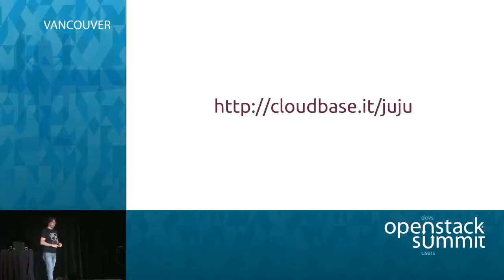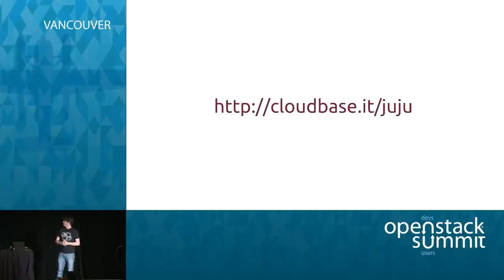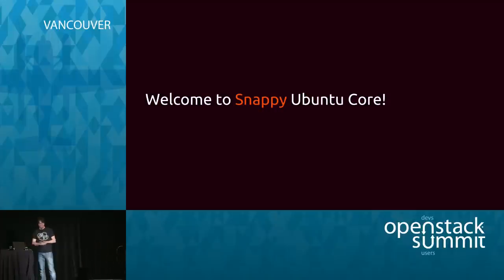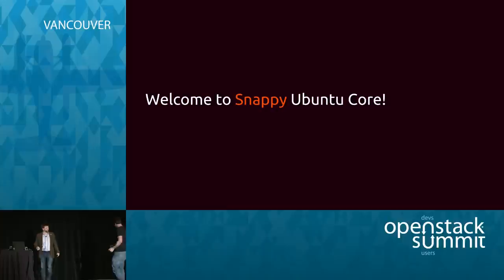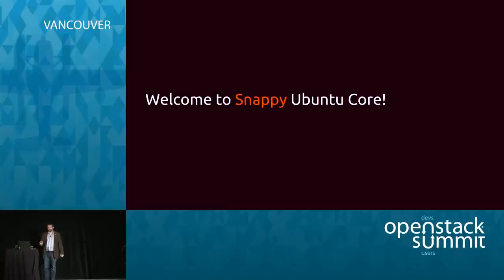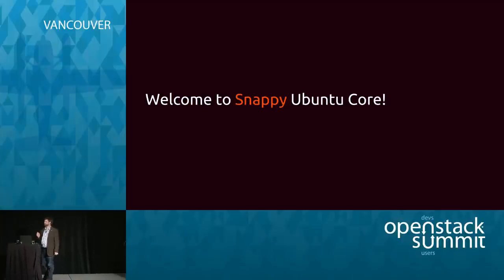All these goodies are available on the Charm Store and at cloudbase.it/juju. The other new guest we wanted to talk about is something called Snappy Ubuntu — Snappy Ubuntu Core.